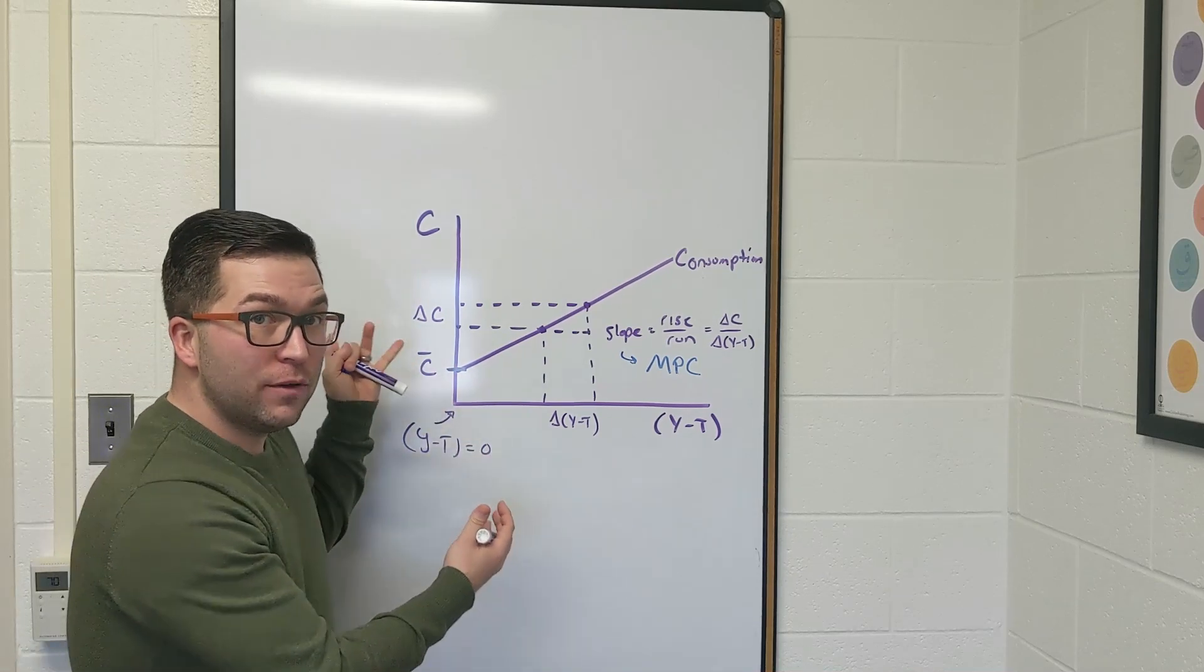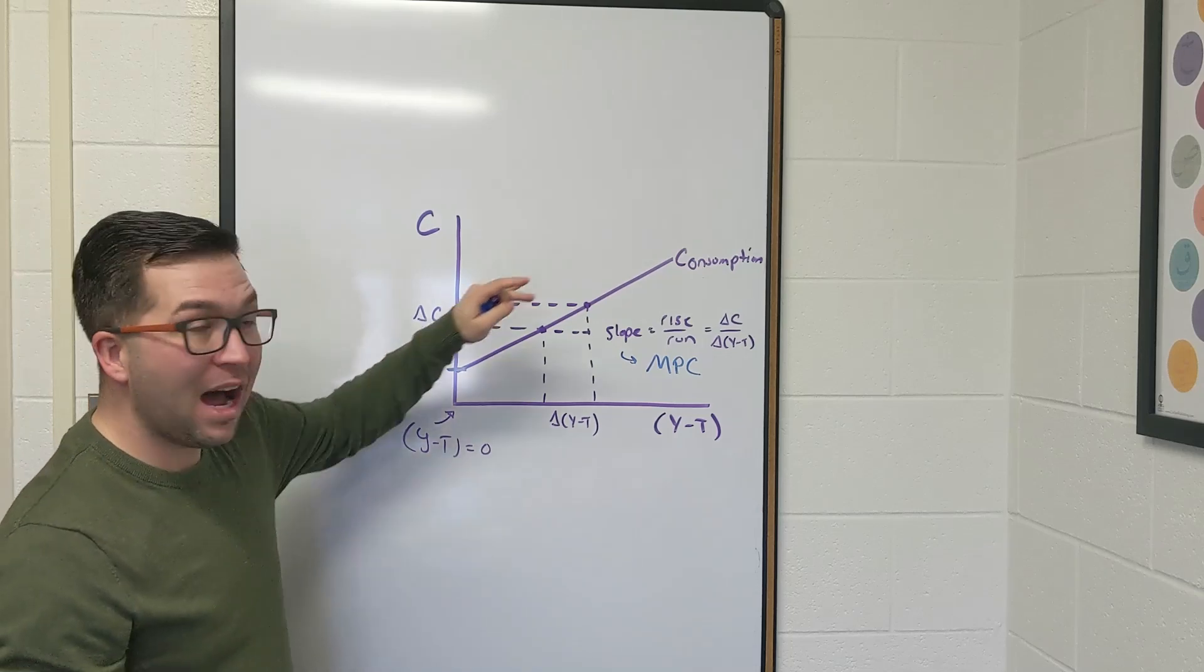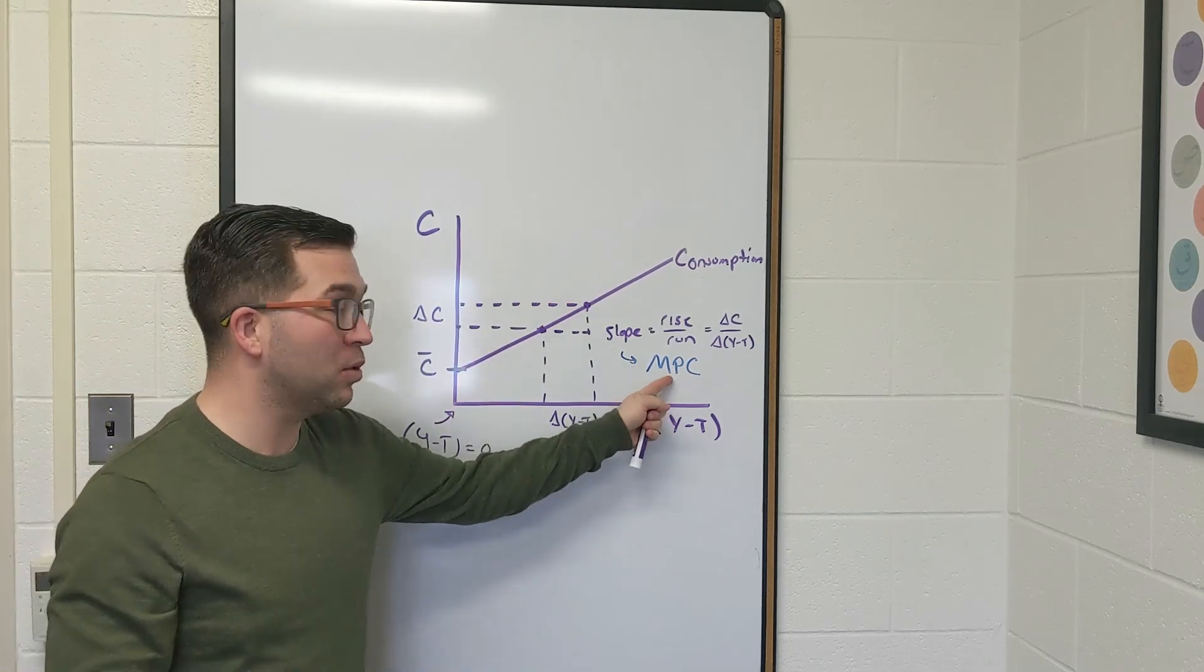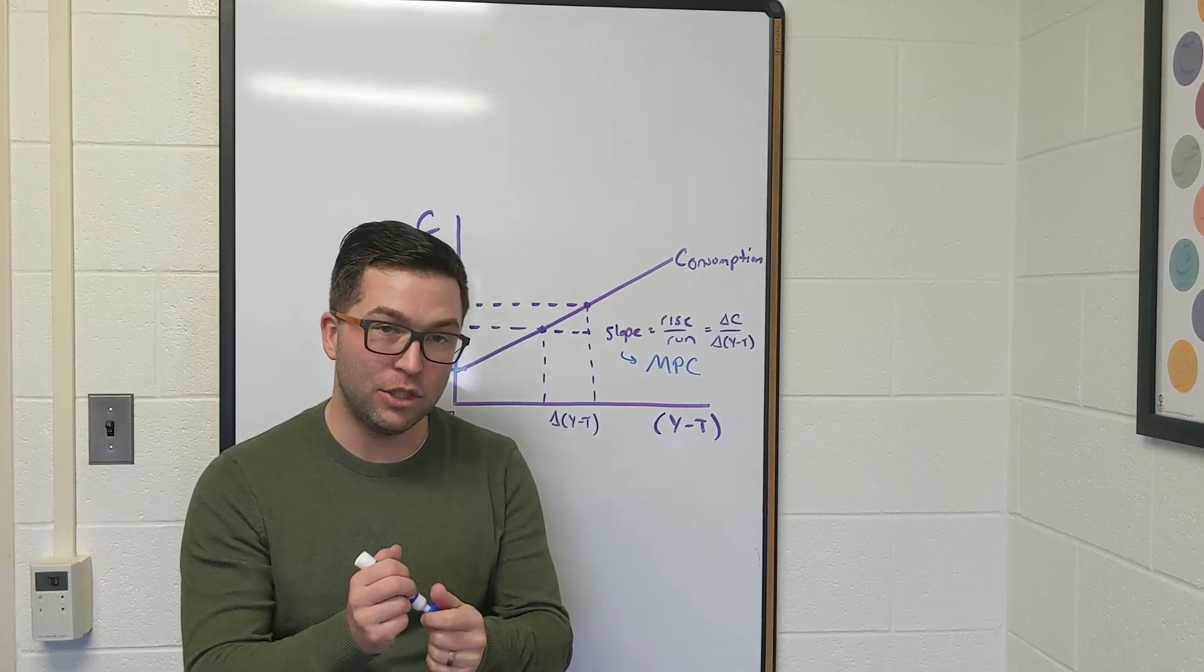This is how we're going to model the consumption function graphically. It's going to be upward sloping. It's going to have a positive and constant slope equal to the marginal propensity to consume, and it's going to start at the level of autonomous consumption.